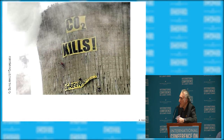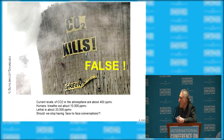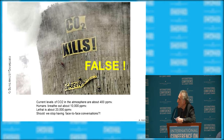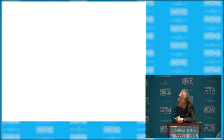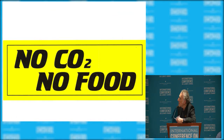Here's another thing that's false: CO2 kills. That's false. When you breathe out, you're breathing out roughly 10,000 parts per million by volume of CO2, and 400 ppm is what's in the atmosphere. 10,000 ppm is still not dangerous; 20,000 is dangerous. Given that we breathe this stuff out, should we stop face-to-face conversations? Carbon dioxide is essential to life — it's not a pollutant, and it makes possible food for all. No CO2, no food.